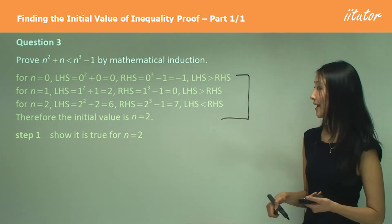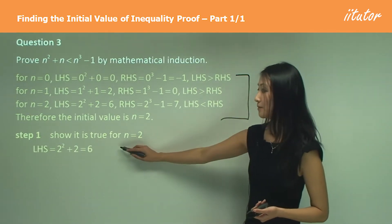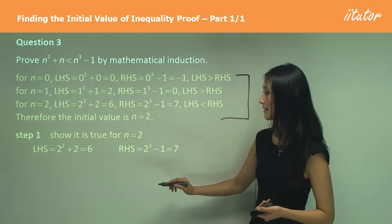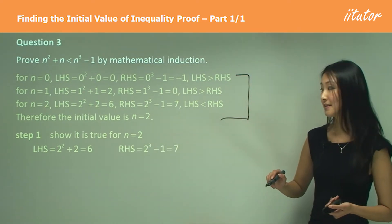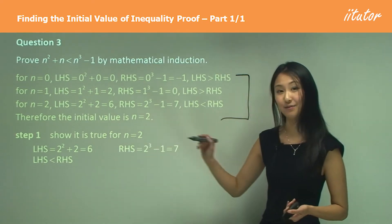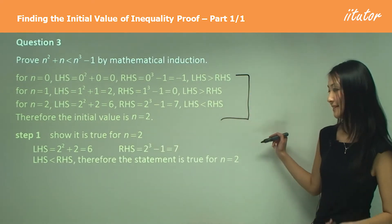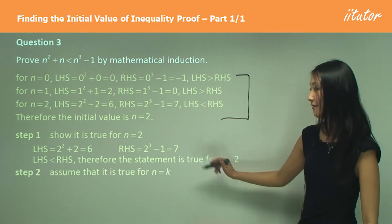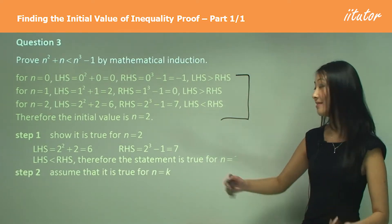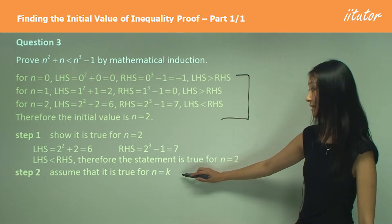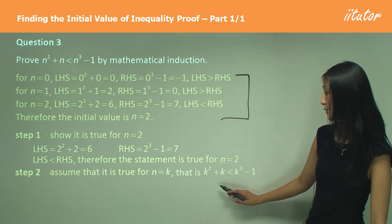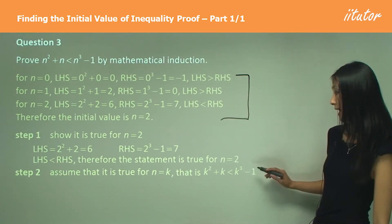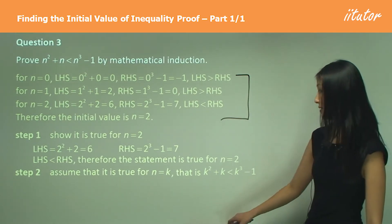Let's start with Step 1: show it's true for n equals 2. The left-hand side is 6 and the right-hand side equals 7. The left-hand side is less than the right-hand side, therefore the statement is true for n equals 2. For Step 2, our assumption is that it is true for n equals k — so we assume that k squared plus k is less than k cubed minus 1.